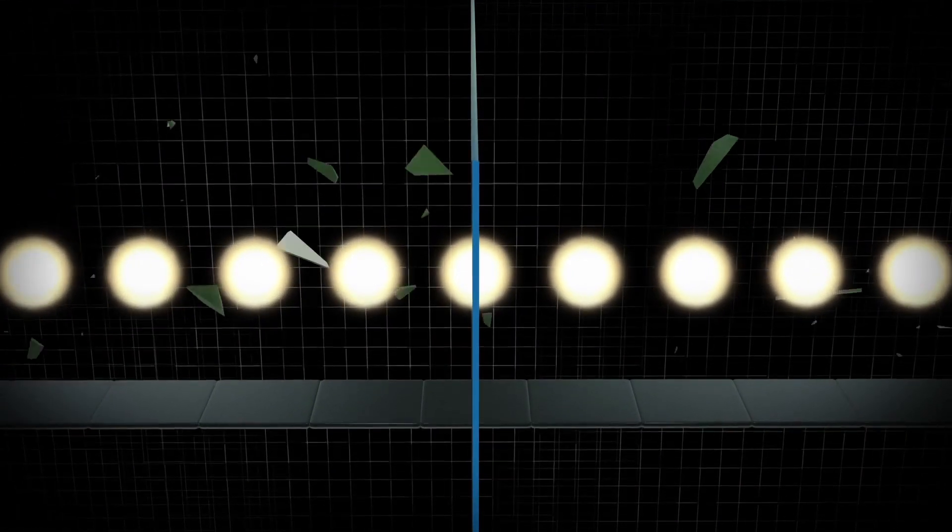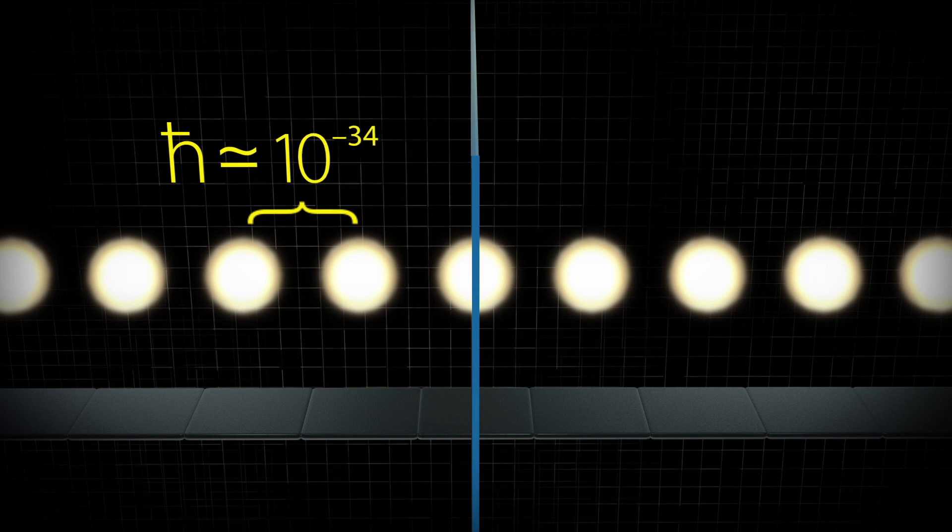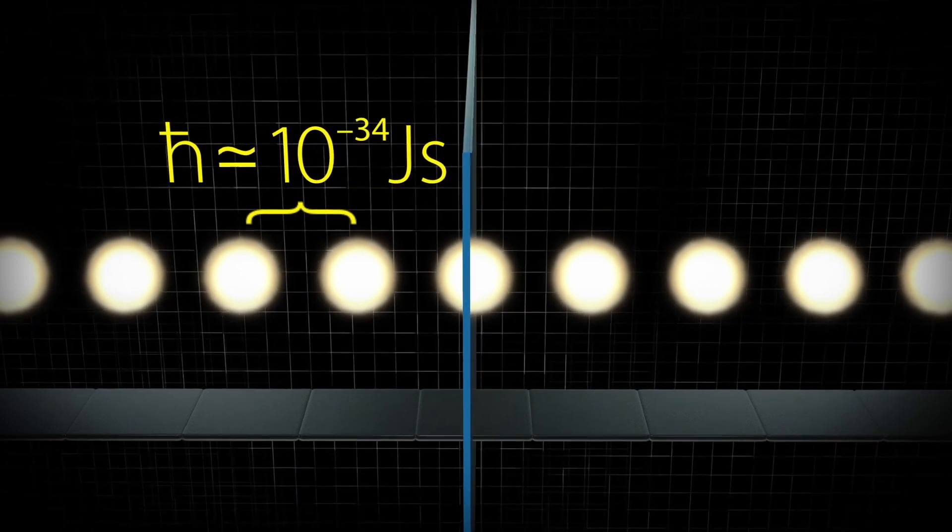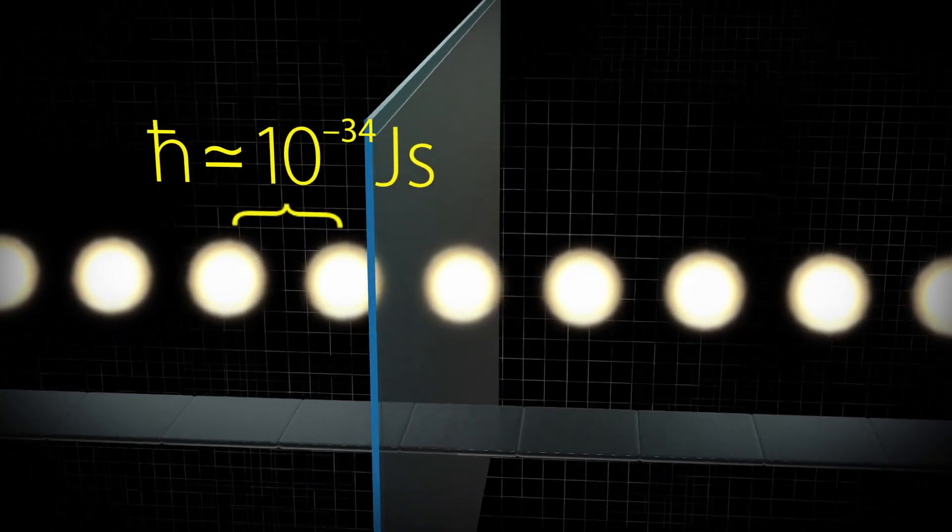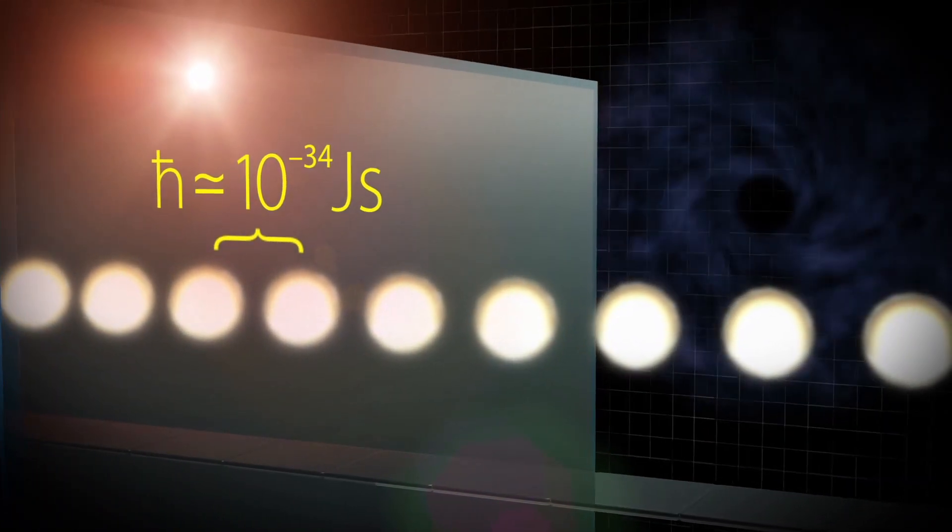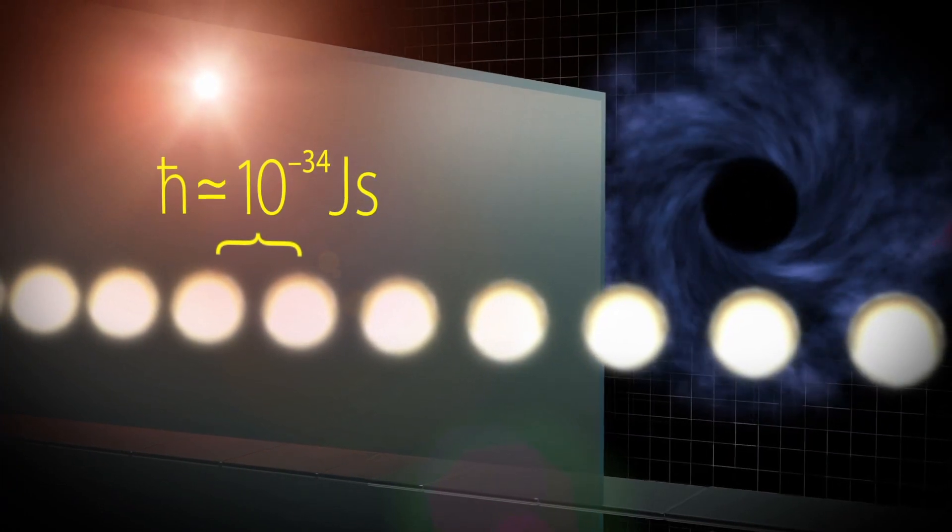In quantum physics, however, this is the crux of the matter. This distance is a universal physical constant h-bar. That is, 10 to the power of minus 34 joule seconds. This value is absolutely immutable. It is equally valid on the Earth, in the Sun's core and inside a black hole.